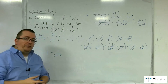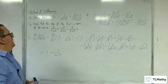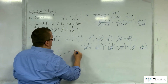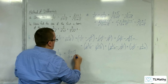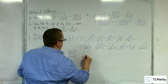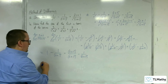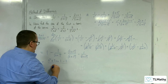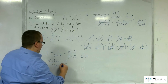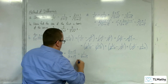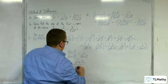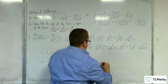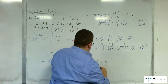So we have 1 take away 1 over n plus 1 squared. Let's simplify that: n plus 1 squared over n plus 1 squared take away 1 over n plus 1 squared. The numerator becomes n squared plus 2n plus 1 take away 1, which gives n squared plus 2n over n plus 1 squared. That factors as n times n plus 2, all over n plus 1 squared.